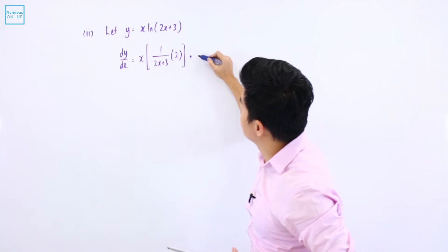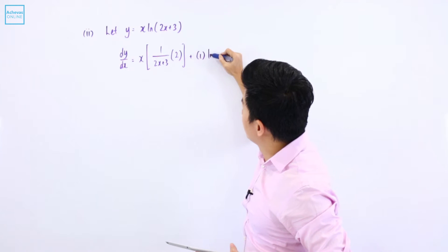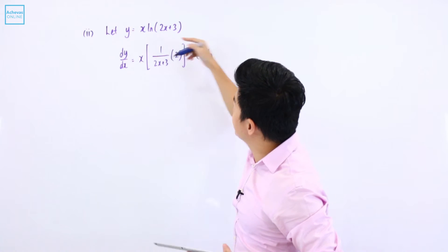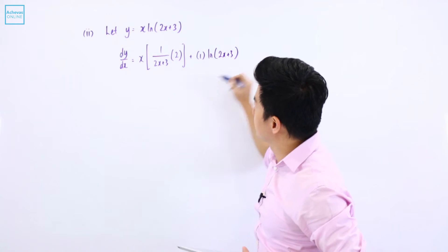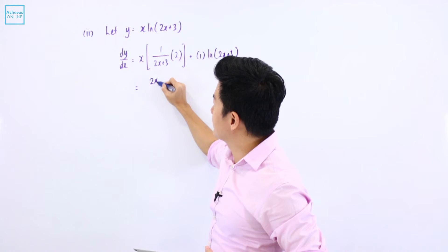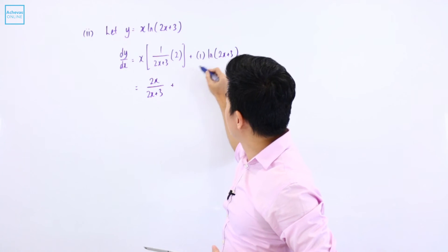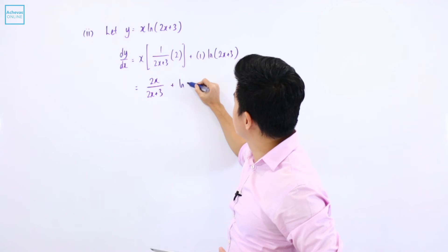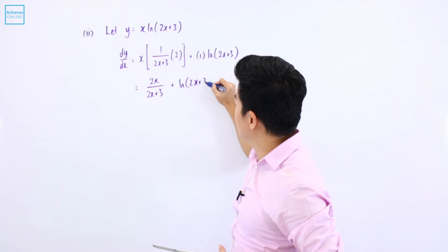Plus differentiating this, it is 1. And then holding this the same, so it is ln of 2x plus 3. This will be equal to 2x divided by 2x plus 3, plus ln of 2x plus 3.